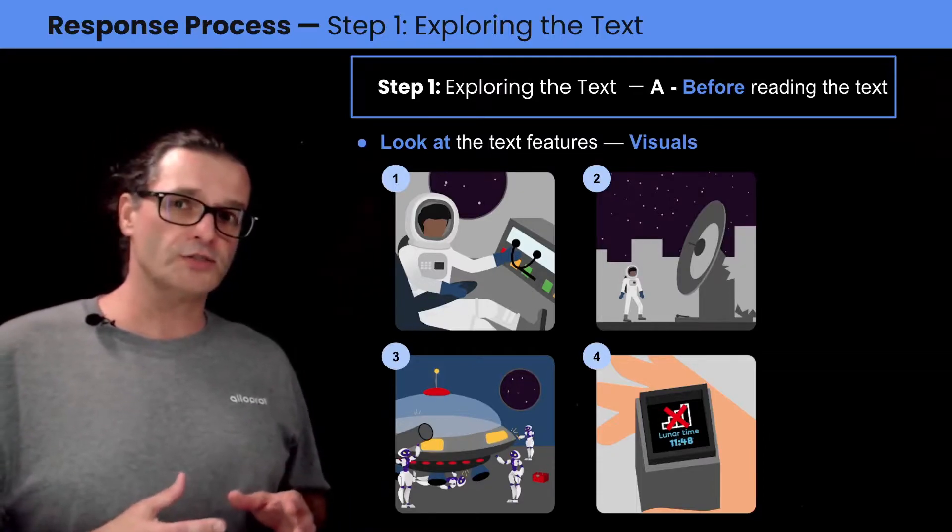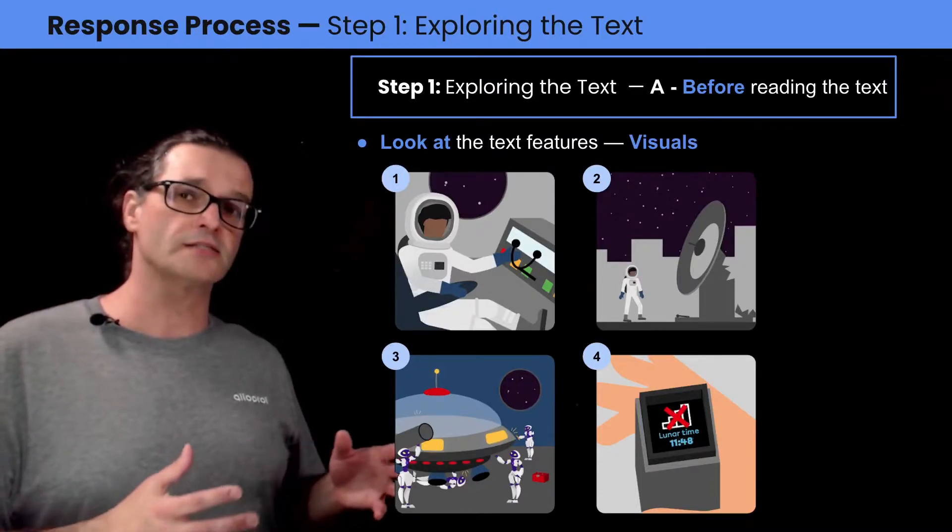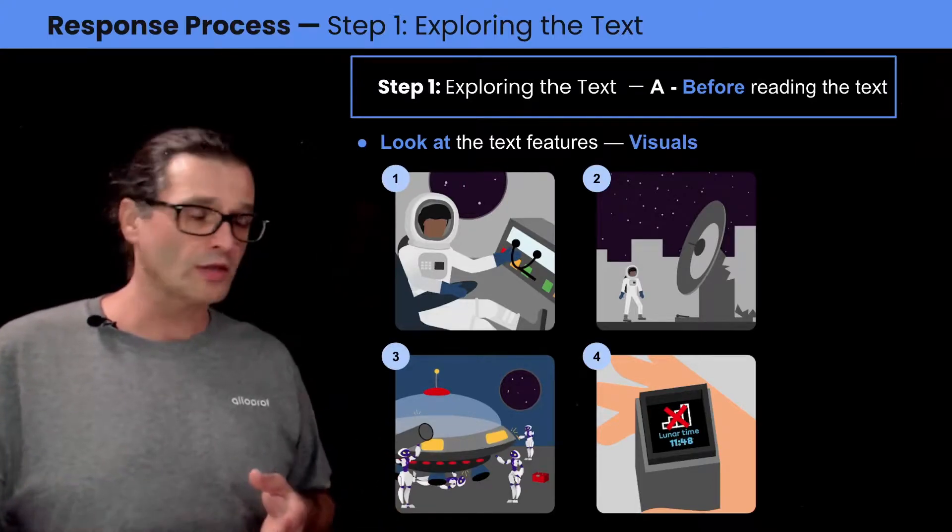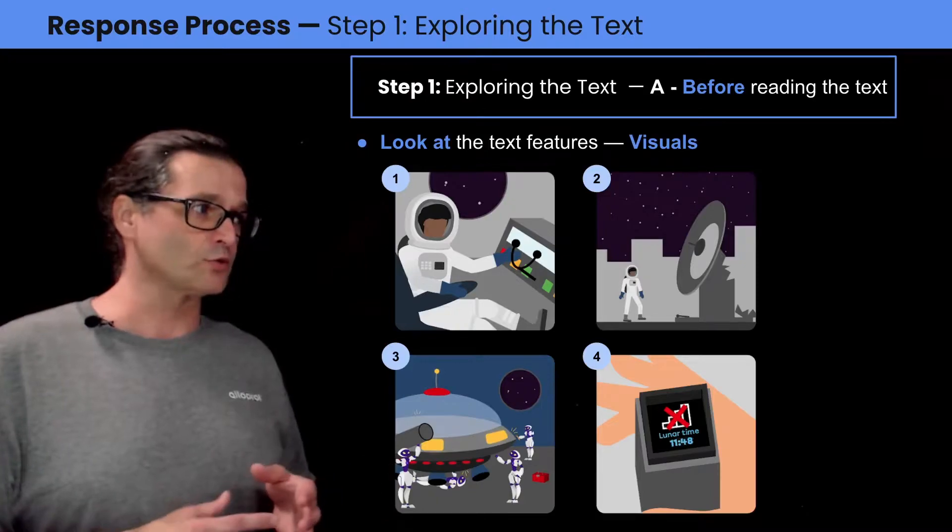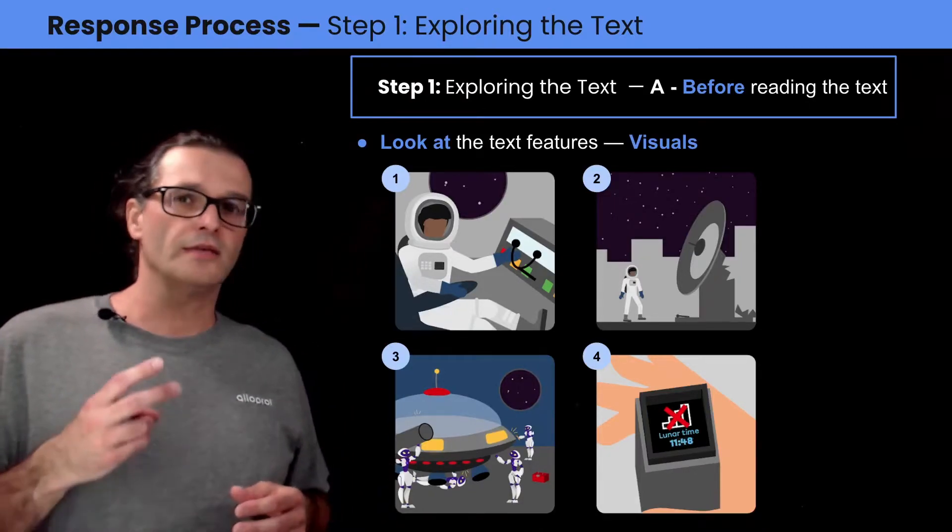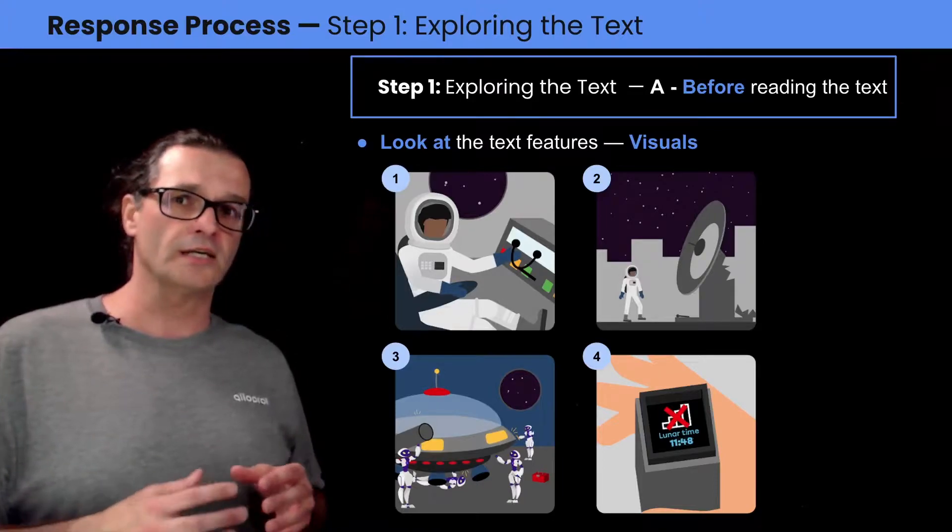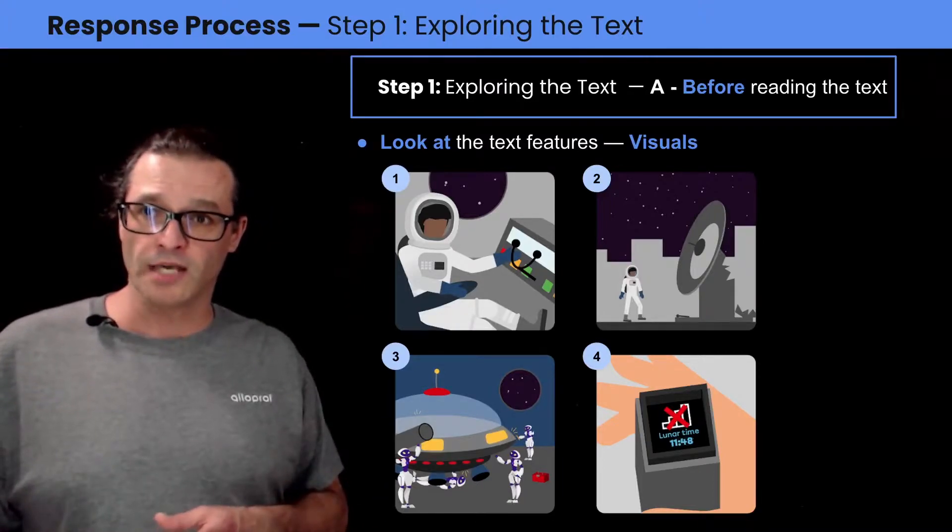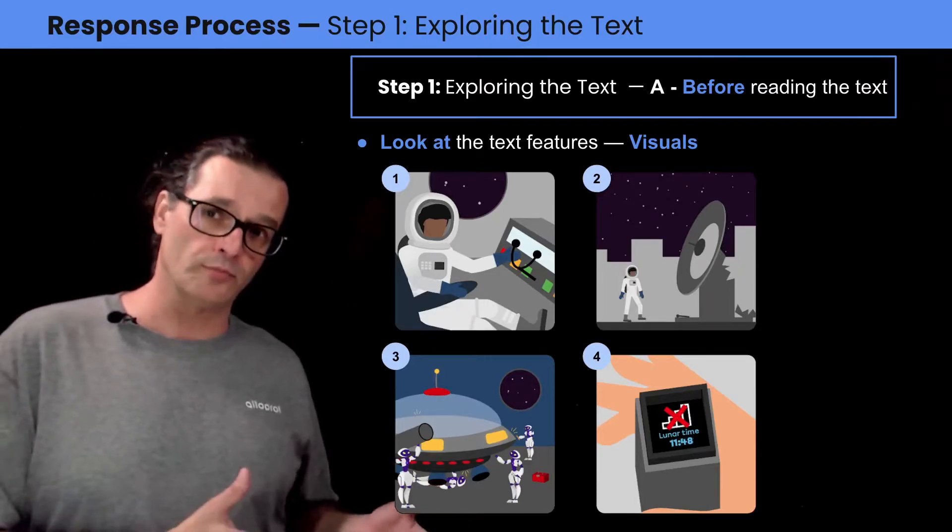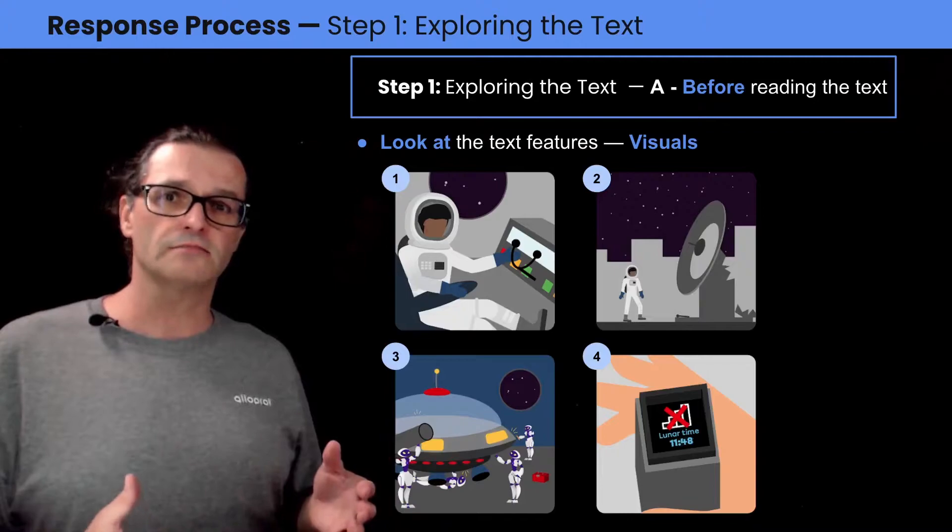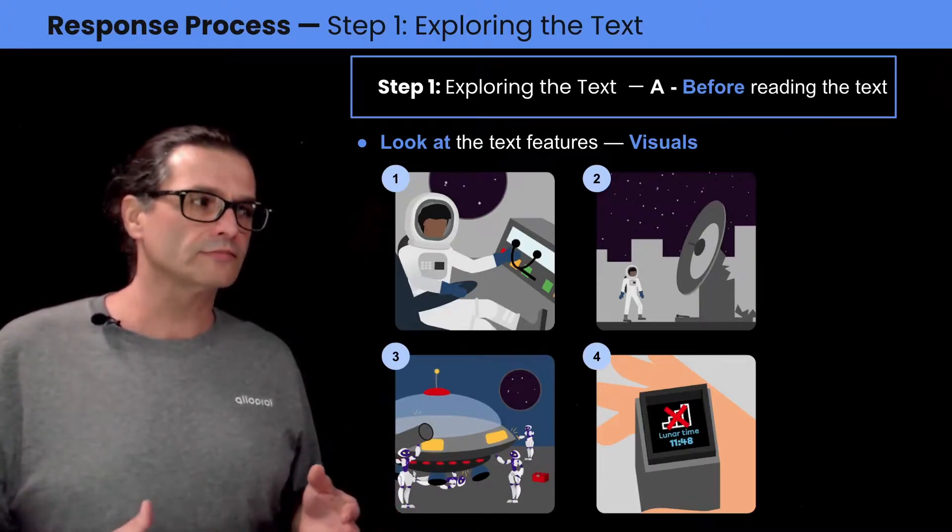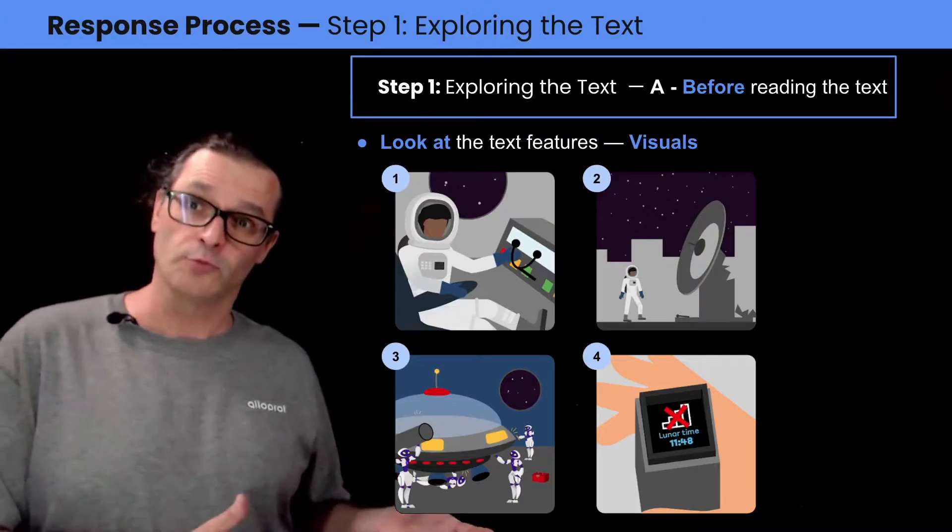In the first image, we see someone sitting at some controls. This someone could be the Astronaut Bob in the title. And the controls imply some sort of technological element to the story. In the second picture, we see an astronaut. It could be the same character or it could be a different character. But this time, it looks to be outside the Moonbase near an antenna that seems to have some damage to it. Why is he outside? Well, I guess it's something we'll have to find out when reading the story.